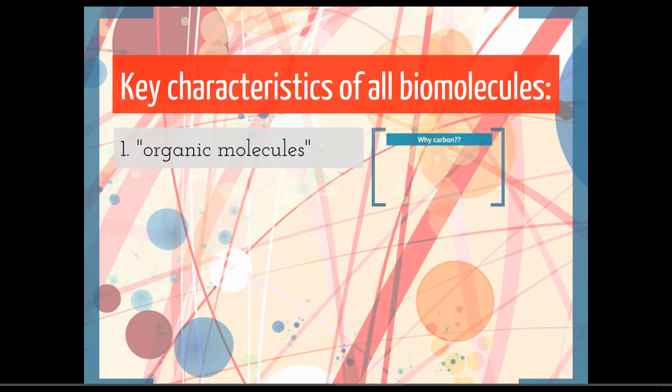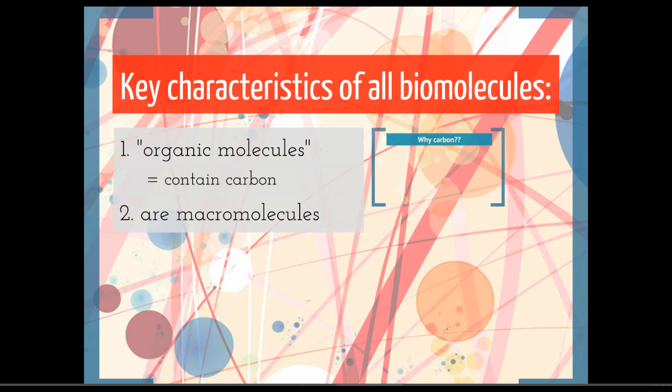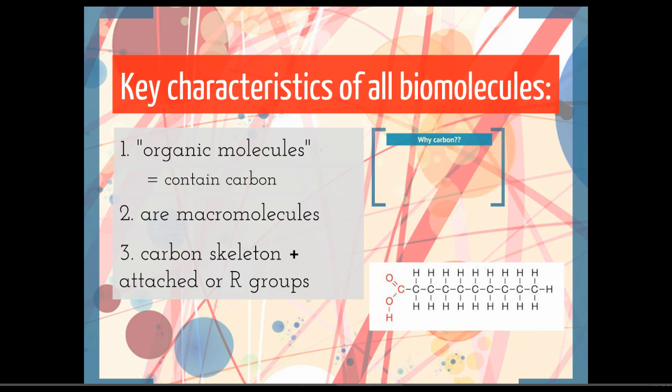Before we talk about the characteristics of each individual kind of biomolecule, here are some characteristics that they all have in common. First, they're all organic molecules, and what organic means chemically is that they contain carbon. This is different from the meaning of an organic walnut or organic apple. That has a legal definition and has to do with pesticide use and fertilizers. This just means there is carbon involved. They're all macromolecules, meaning they have generally smaller units that are repeating. And they all have this structure of a carbon skeleton with an attached R group. Let me show you what I mean by that.